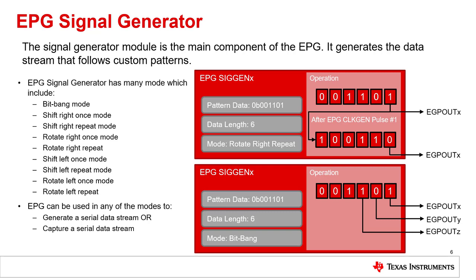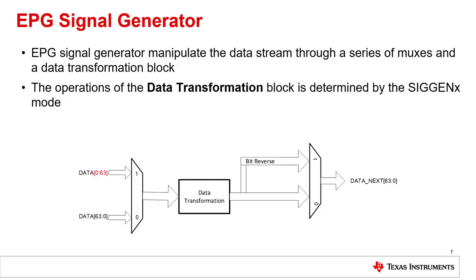The siggen module can be used to not only generate serial data streams, but also capture incoming serial data streams. EPG signal generator modules manipulate the input data stream through a series of MUXs and a data transformation block. The operation of the data transformation block is determined by the selected siggen mode. By selecting the data transformation block's mode of operation and configuring the available MUXs to select other settings such as the NDNS of the data, each application can use the siggen module to address a unique system requirement.